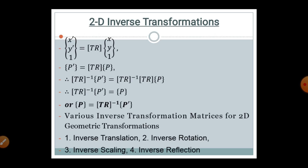The various inverse transformation matrices for 2D geometric transformations are: inverse translation, inverse rotation, inverse scaling, and inverse reflection. These are widely used while doing geometric transformations in CAD software. These 2D geometric transformation operations are used to perform multiple composite operations to do the translation.